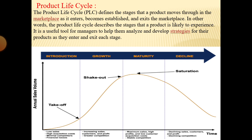From introduction to decline, a product progresses through a sequence of stages. A product life cycle defines the stages that a product moves through in the marketplace as it enters, becomes established, and exits the market. In other words, the product life cycle describes the stages that a product is likely to experience. It is a useful tool for managers to help them analyze and develop strategies for their products as they enter and exit each stage. The major stages in the product life cycle are: introduction, growth, maturity, and decline.